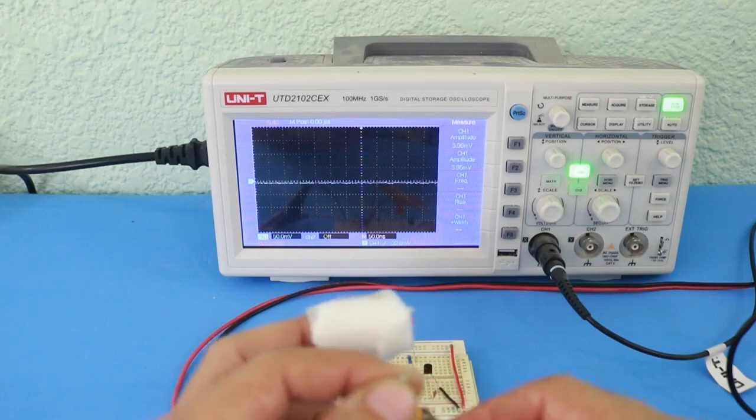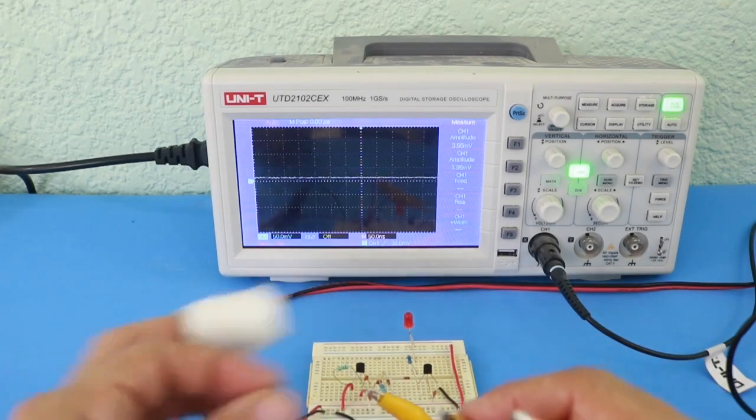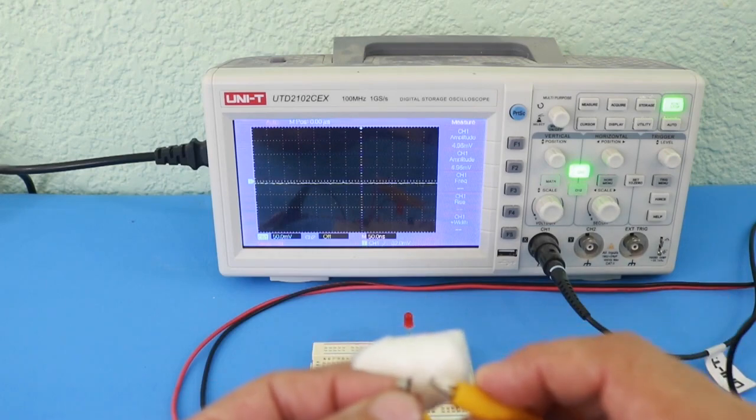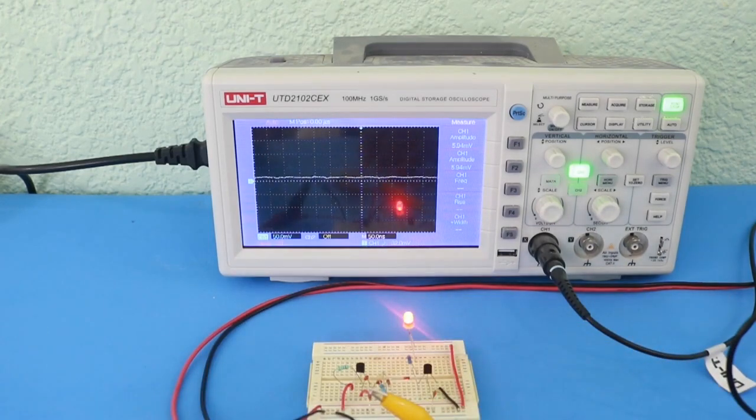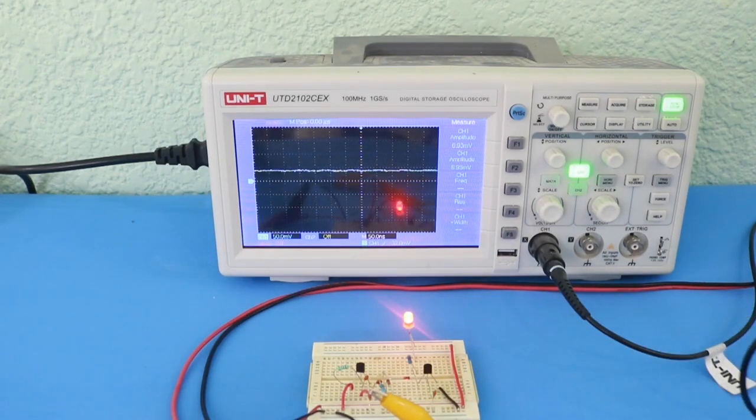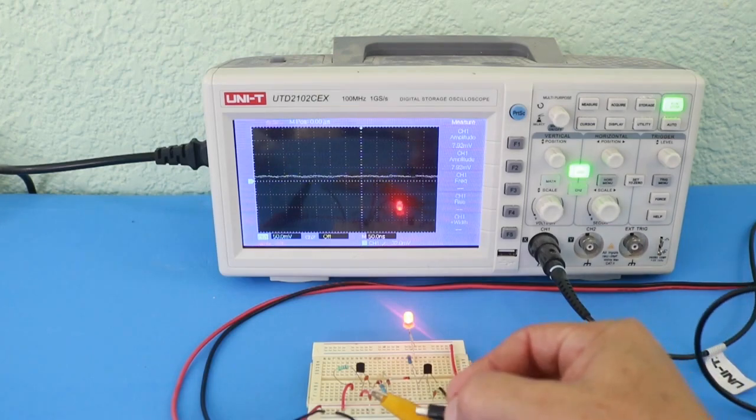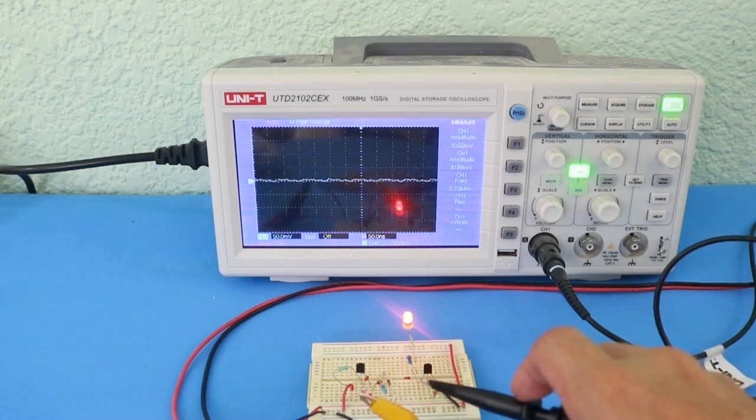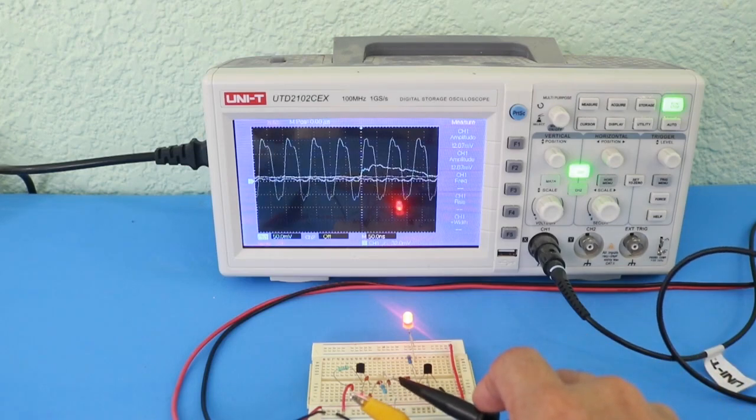So let me connect back the good crystal and see the output of the circuit in the oscilloscope. I will connect first the point before the rectifier part.